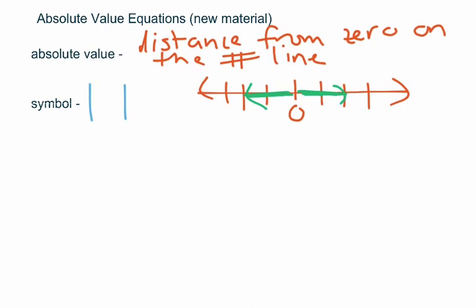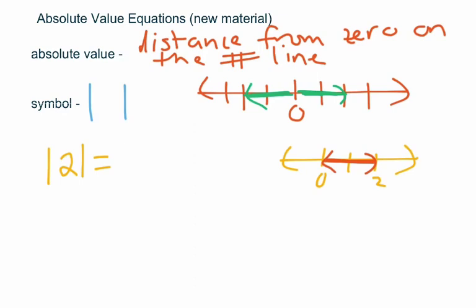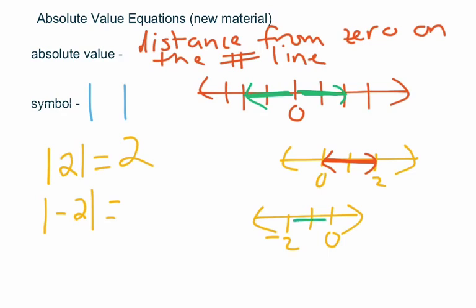We'll do a couple of examples of absolute value. The absolute value of 2 is asking you how far away from zero is 2 on the number line. Here's the zero, here's two — if I were to bust out a ruler and measure that distance, it would be two units long. Absolute value of negative two: again it's the distance from zero on the number line. Here's the zero, here's negative two — that distance would also be two units. Now this will sometimes lead students to make the conclusion that absolute value is always positive — not necessarily, and we'll look at that in a moment.